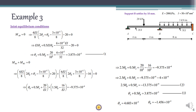Substitute all known values and find all four slope deflection equations: MAB, MBA, MBC, and MCB. The next step is to write the joint equilibrium conditions. The first condition is at the simple support A — MAB equals zero. From the slope deflection equation for MAB set equal to zero, simplifying gives: θ_A + 0.5θ_B = 3.875 × 10⁻³.